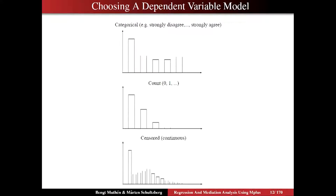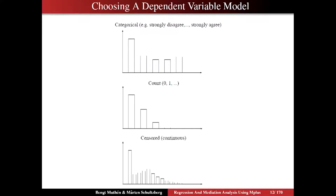Now, looking at the count outcome — how does that differ from the categorical? It still has discrete points on the x-axis, but a typical count variable answers the question: how many times did you do something in the last month? It typically deals with very rare events. The bar for zero is often very high, but then the probability drops off very quickly down to zero. We'll see an example of that later on.